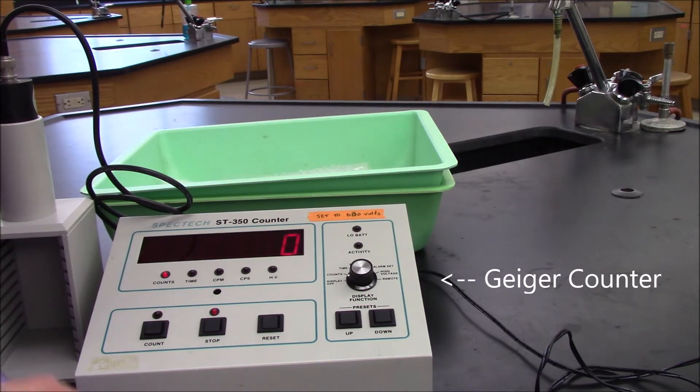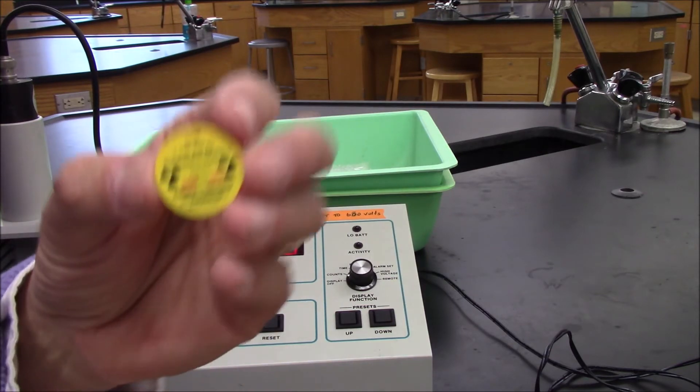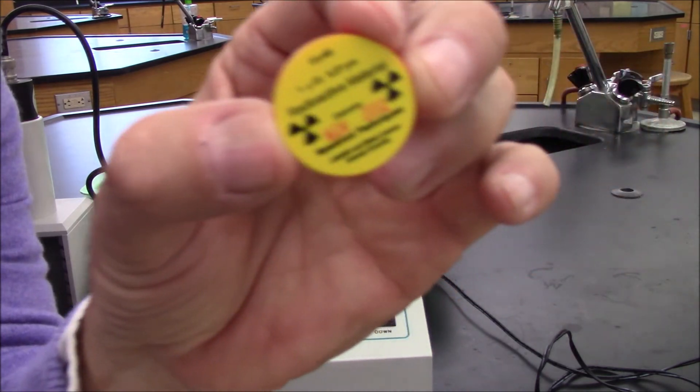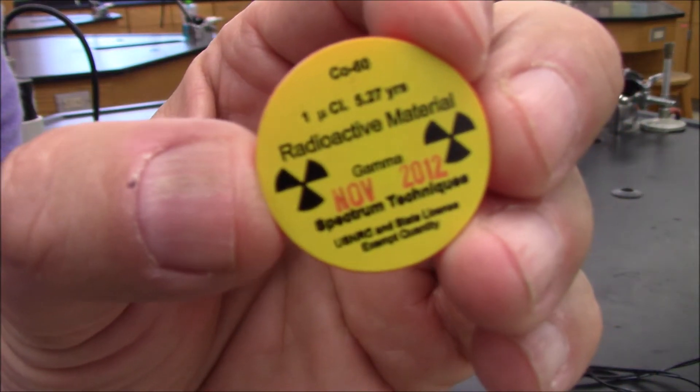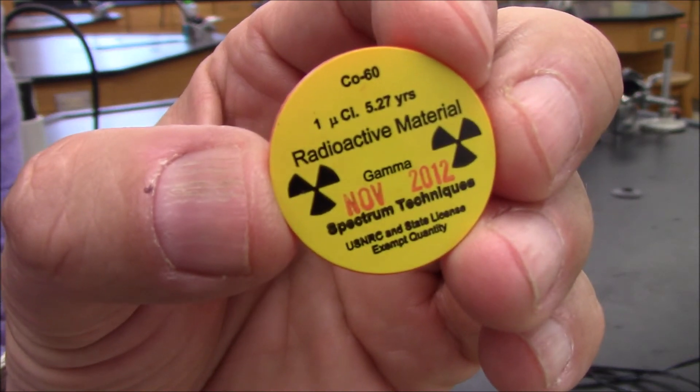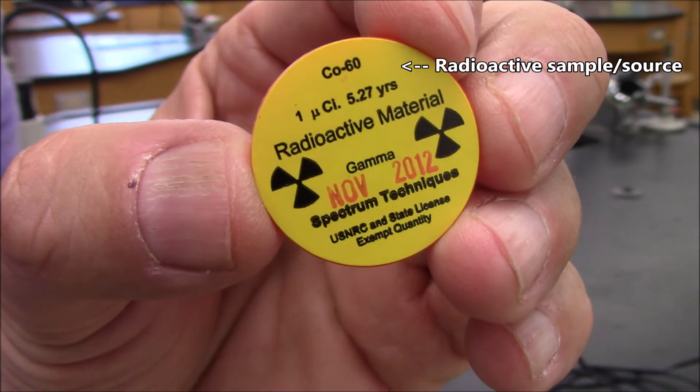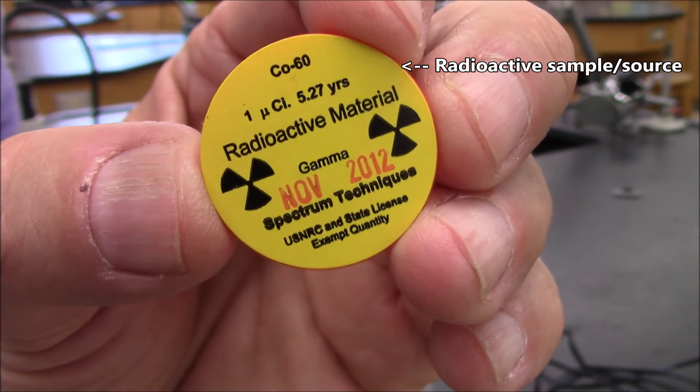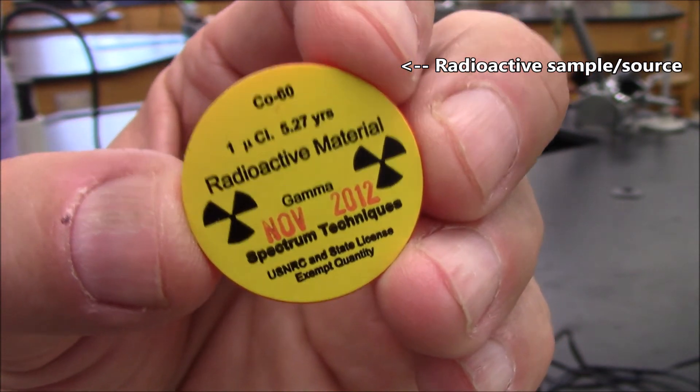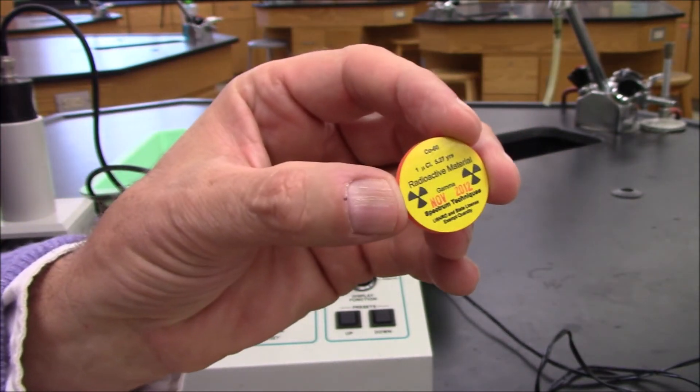So each sample looks something like this. There's a little disc. It tells you the sample, the type of radioactivity, the half-life, and the microcurie. The one microcurie is the dose. Most of this disc is a piece of plastic.